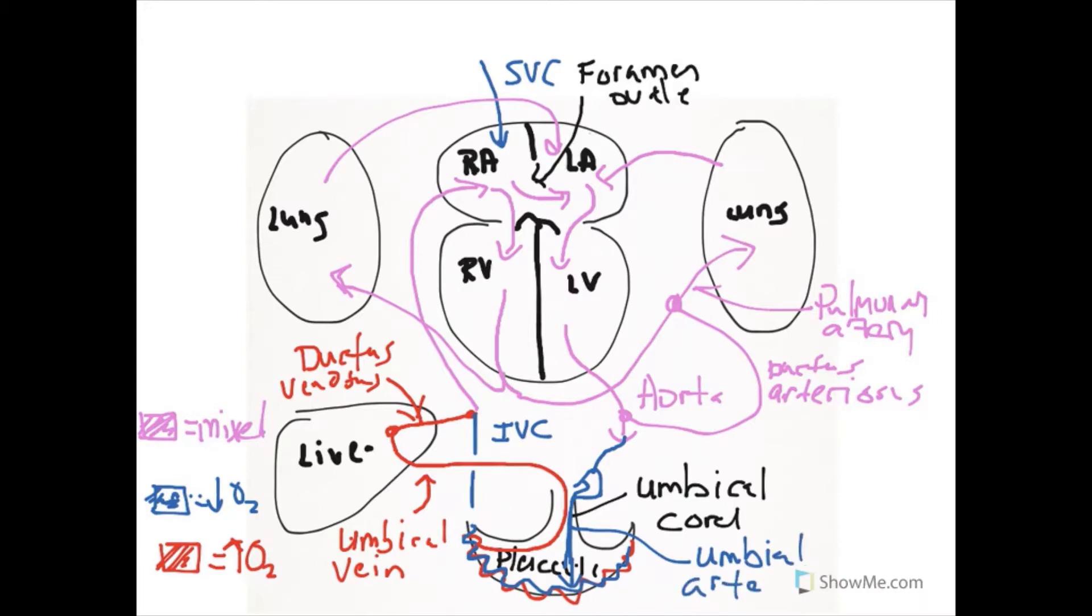We want to label these as the umbilical arteries carrying deoxygenated blood out of the aorta. These will later become the lateral bladder ligaments and are still there on your bladder in the adult. There are two umbilical arteries and one umbilical vein.